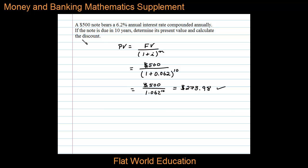Now it also asks us to calculate the discount. The discount is equal to the future value less the present value. So in this case, the future value is $500, and we'll subtract the present value, which is $273.98.